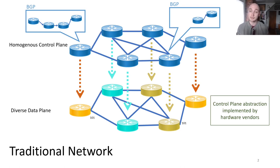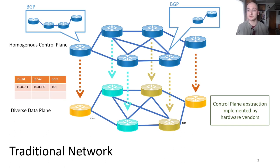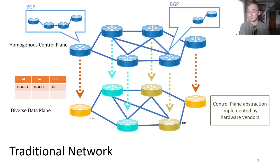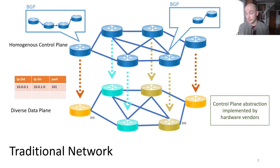The central abstraction for describing data plane pipelines is the match-action table, which reads packet values — here the source IP and destination addresses — and assigns a value to the output port. Here, we match the destination 10.0.0.1 and the source 10.0.1.0 and set the output port to 101.